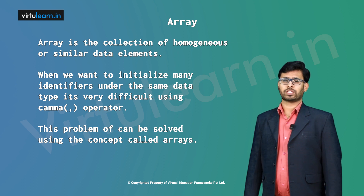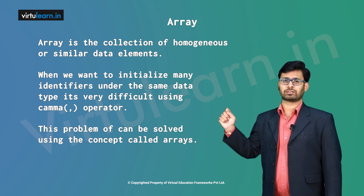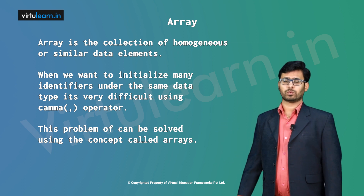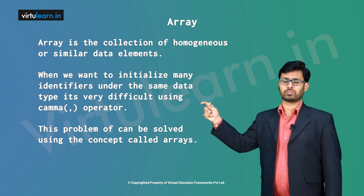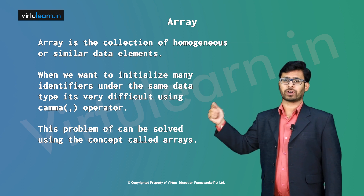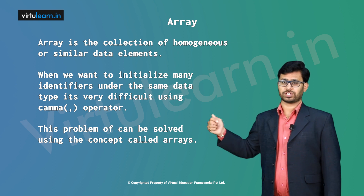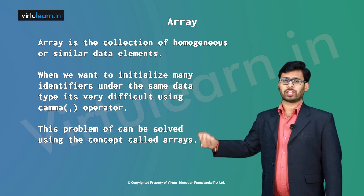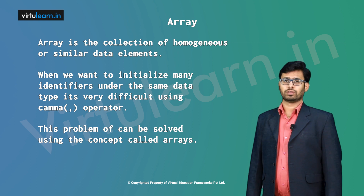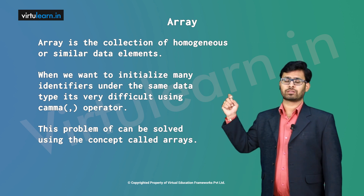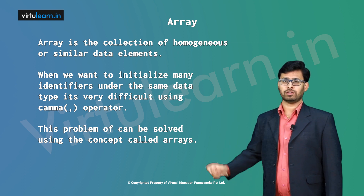In a given program, we can initialize identifiers with the same name, such as int followed by identifier names. Once we initialize the identifiers with the comma operator, we can also initialize them using the array notation — using an array name followed by the size of the given elements. Similarly, we can initialize for all the different data types within the array.